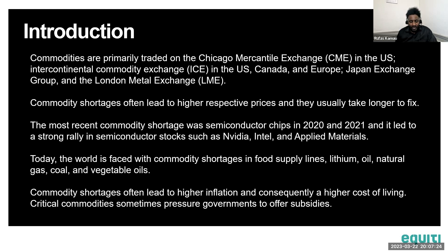The most recent commodity shortage was semiconductor chips in 2020 and 2021, which led to a strong rally in stocks such as Nvidia, Intel, and Applied Materials. Today, the world faces commodity shortages especially in food supply lines, lithium, oil, natural gas, and vegetable oils.